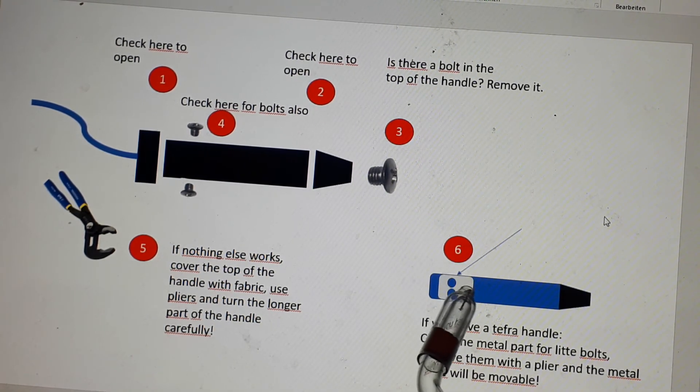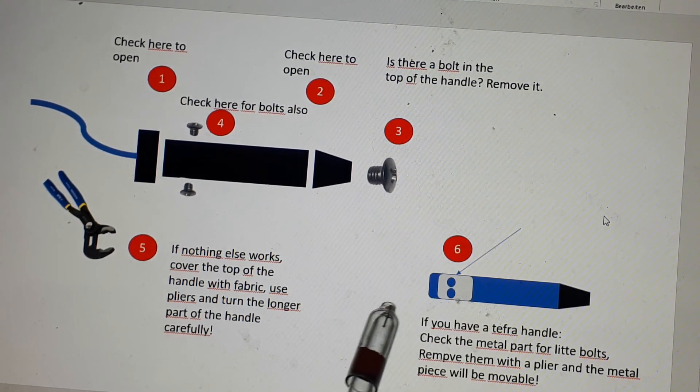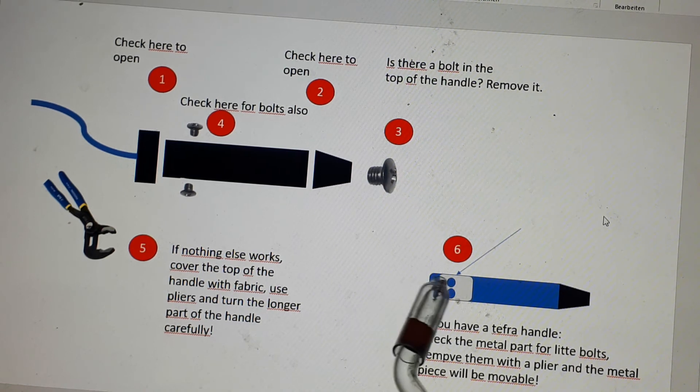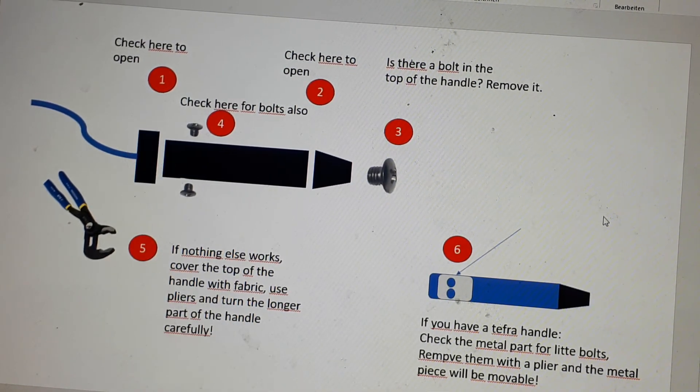You just pull it out and then you can remove this metal ring which is around the handle. And then the handle will open because this metal ring covers also this part here of the handle.